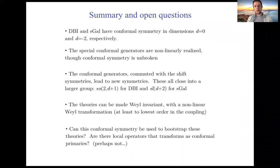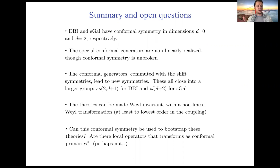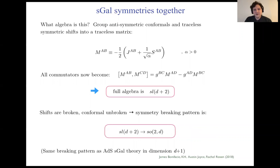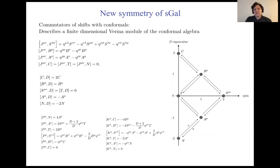Quick question: what happens at D equals minus four? You go D equals zero for DBI, D equals minus two for the special Galilean — does the pattern stop? If you continue the pattern, for D equals minus four the representation would have to be a symmetric traceless rank-3 tensor. If you look at what algebra that could satisfy, there is no non-linear algebra it could satisfy — the algebra just doesn't exist unless it's trivial. So the free scalar has these symmetries at any negative even-dimensional D, but DBI and the special Galilean are the only interacting cases.